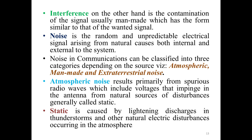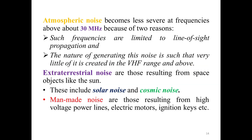Noise in communication systems can be classified into three categories depending on the source: atmospheric, man-made, and extraterrestrial noise. Atmospheric noise results primarily from spurious radio waves, which include voltages that impinge on the antenna from natural sources of disturbances, generally called static. Static is caused by lightning discharges in thunderstorms and other natural electrical disturbances in the atmosphere. Atmospheric noise becomes less severe at frequencies above 30 MHz because such frequencies are limited to line-of-sight propagation, and very little of this noise is created in the very high frequency range and above.